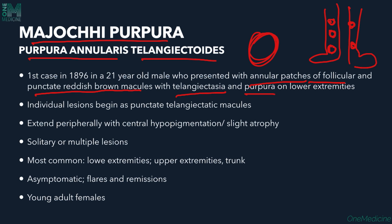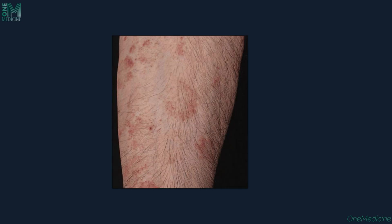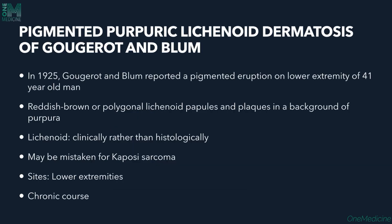Individual lesions begin as punctate telangiectatic macules that extend peripherally with central hypopigmentation, forming an annular configuration. There can be single or multiple lesions. The lower extremities are the most common site, though the upper extremities and trunk can also be involved. Young adults are commonly affected, with asymptomatic flares and remissions.